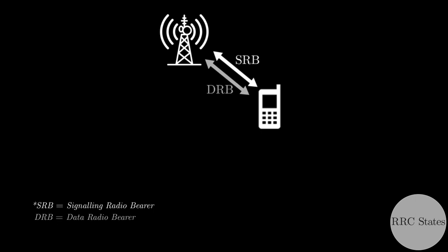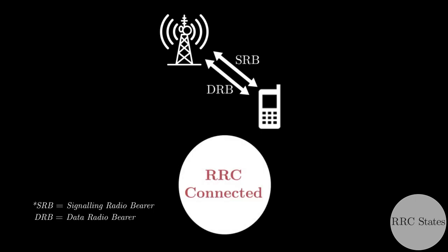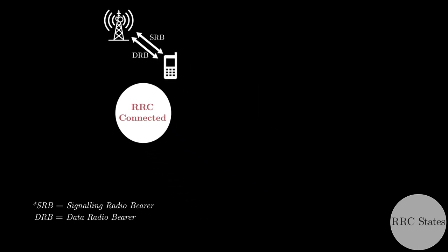When there is a data transfer between base station and UE, then both SRB and DRB are active, and this state is called RRC connected state. Similarly, if there is no data transfer between UE and base station for a long duration, then base station can release both DRB and SRB connections.